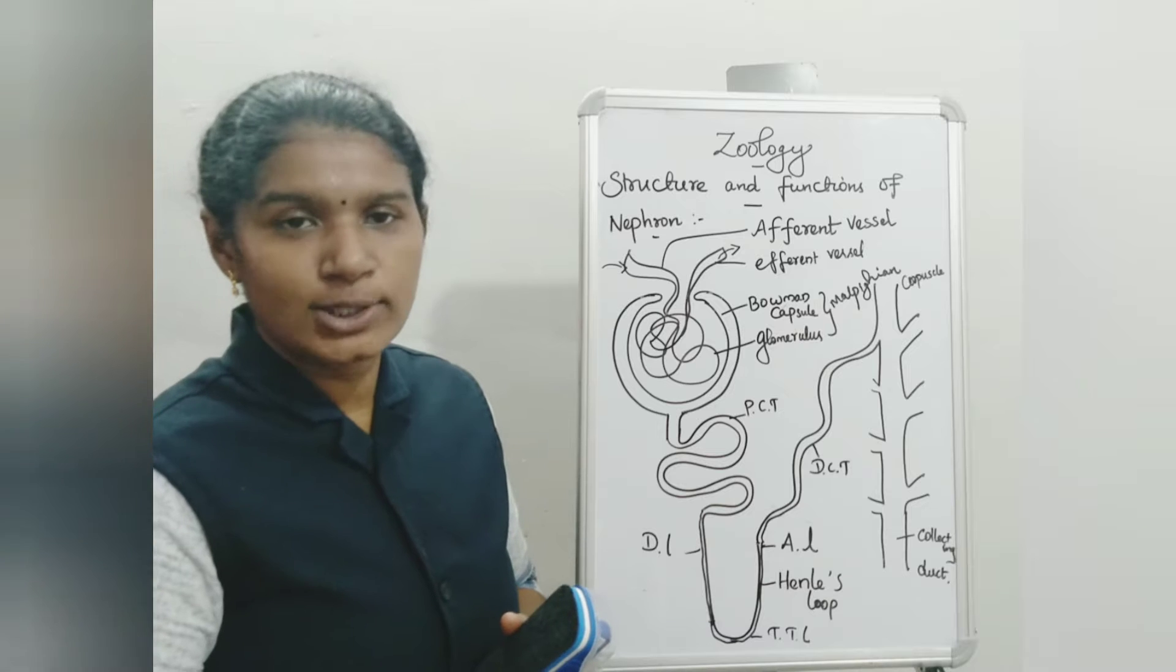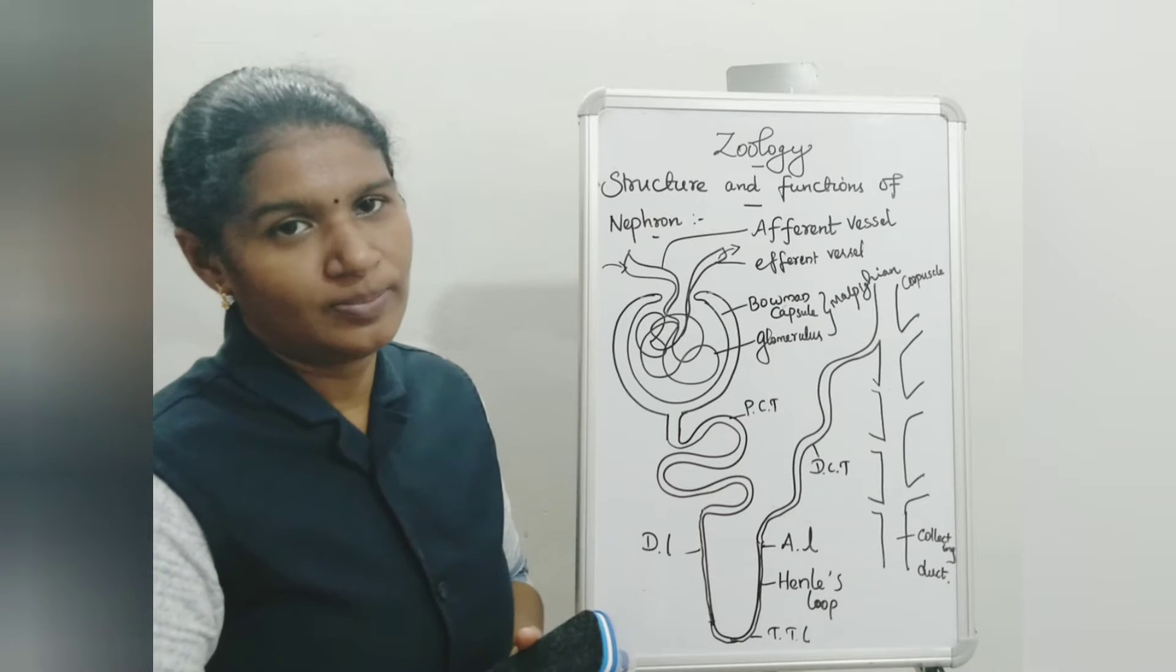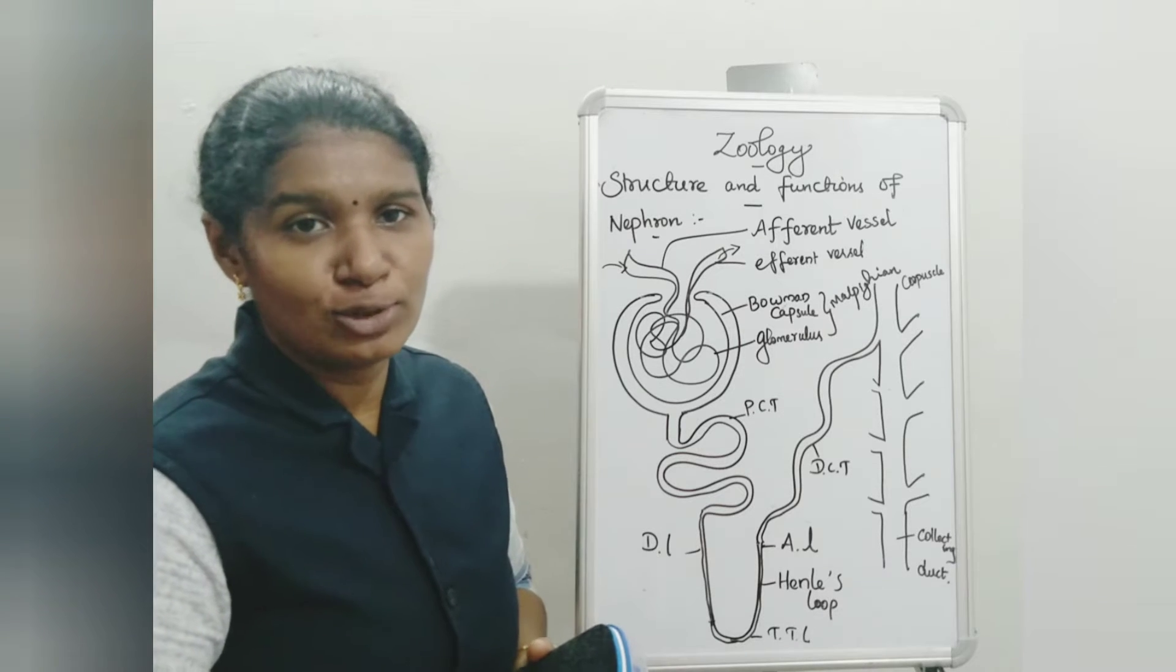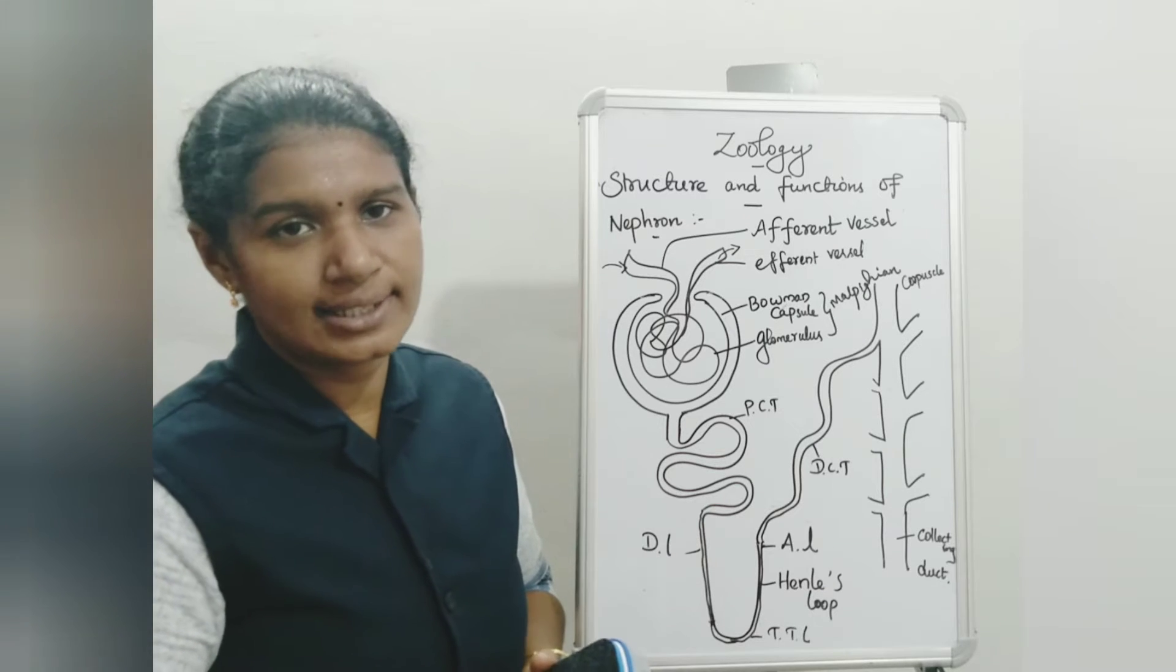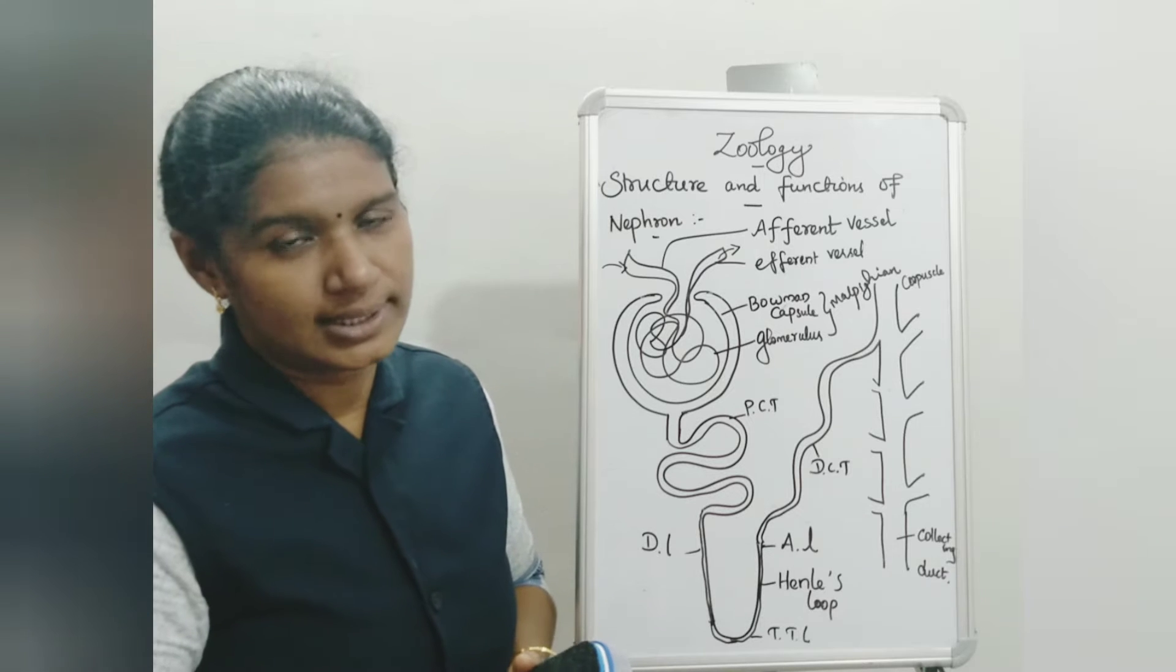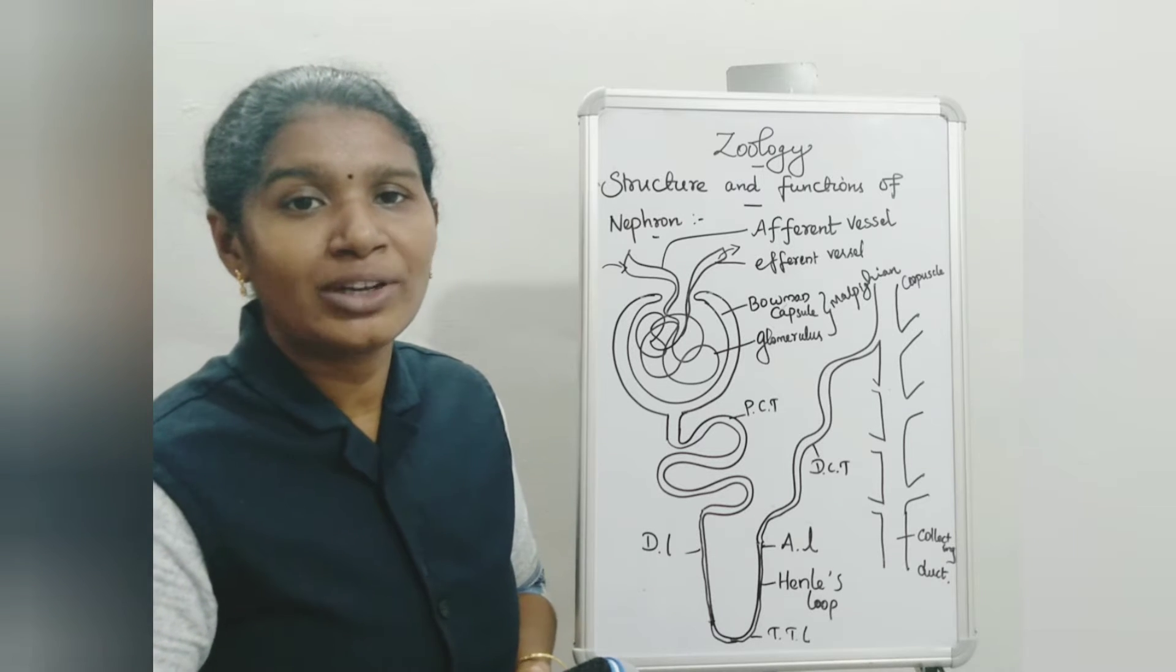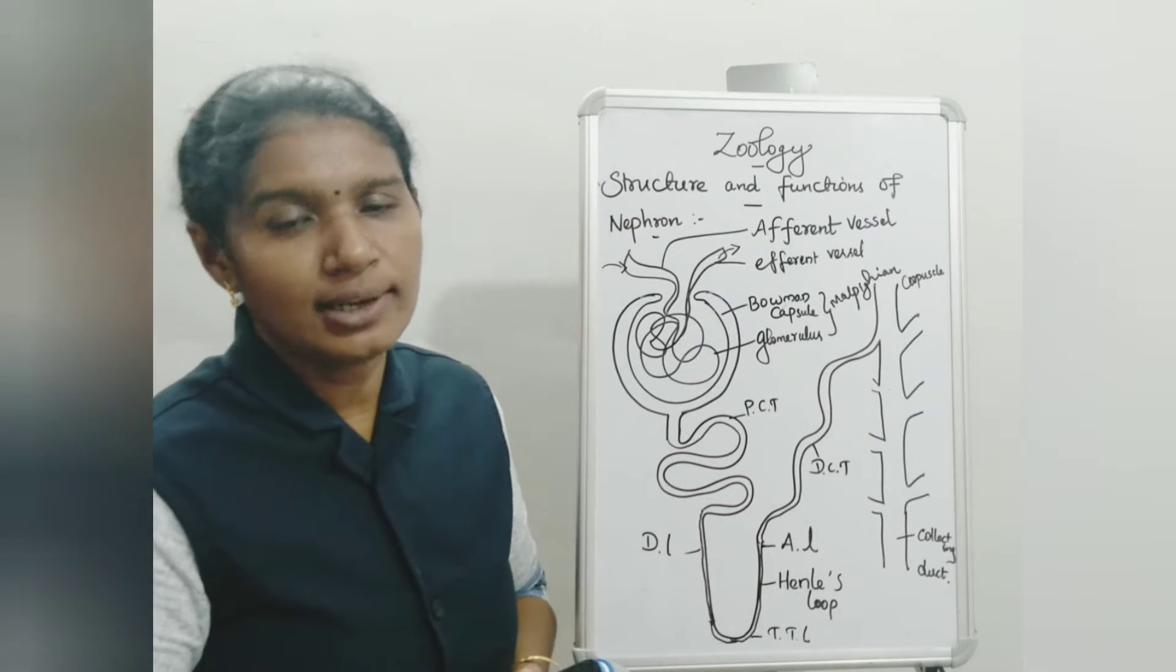Nephron, otherwise called uriniferous tubule, is the functional unit of the kidney. Each kidney consists of millions of nephrons, nearly 1.5 million nephrons are present.